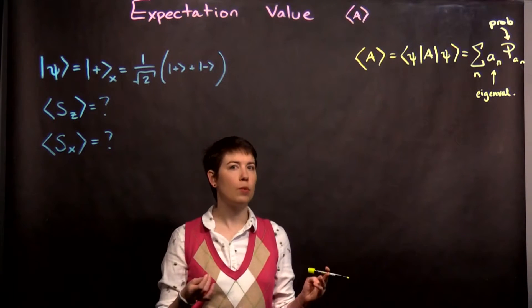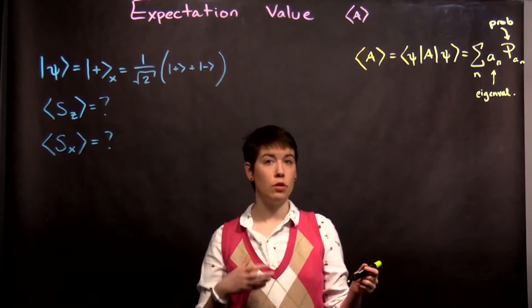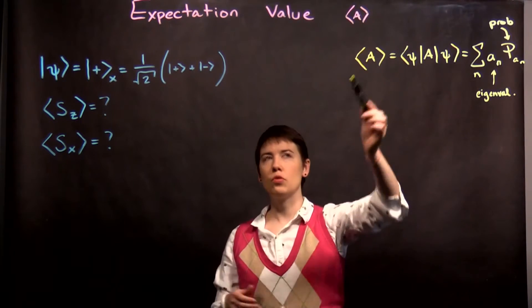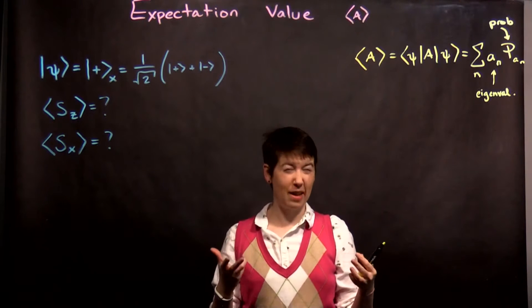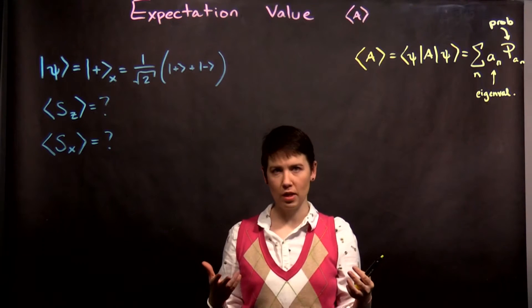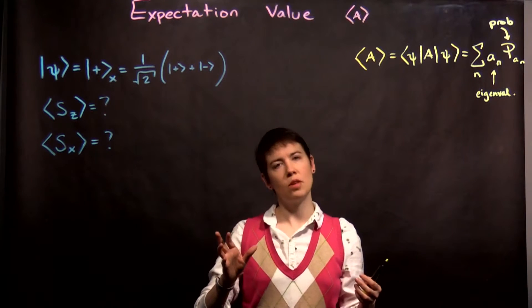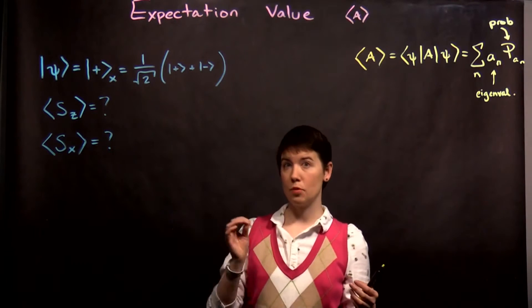When we denote expectation value, we're putting our operator or the variable representing our matrix itself within angle brackets. So that just means find the expectation value of this measurement. You can think about that as an average, but it has a very specific meaning, so it's helpful to think about this as expectation value.